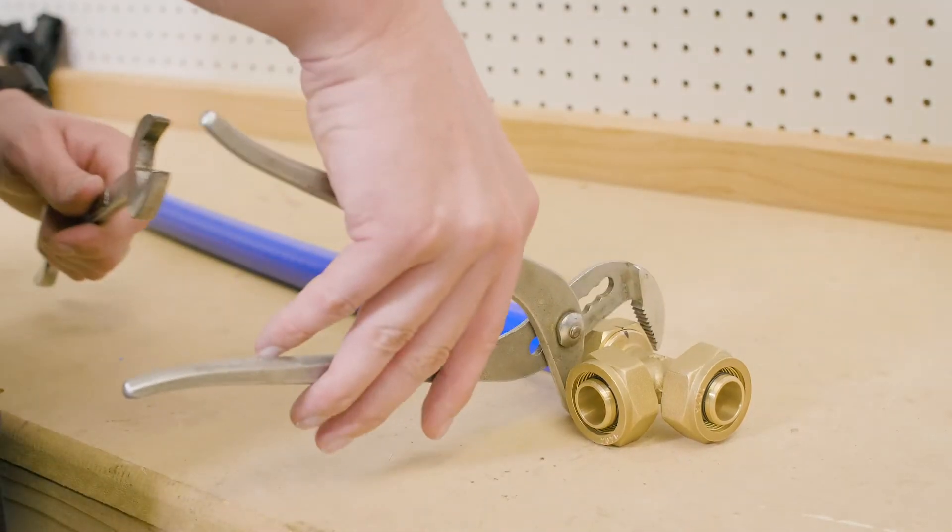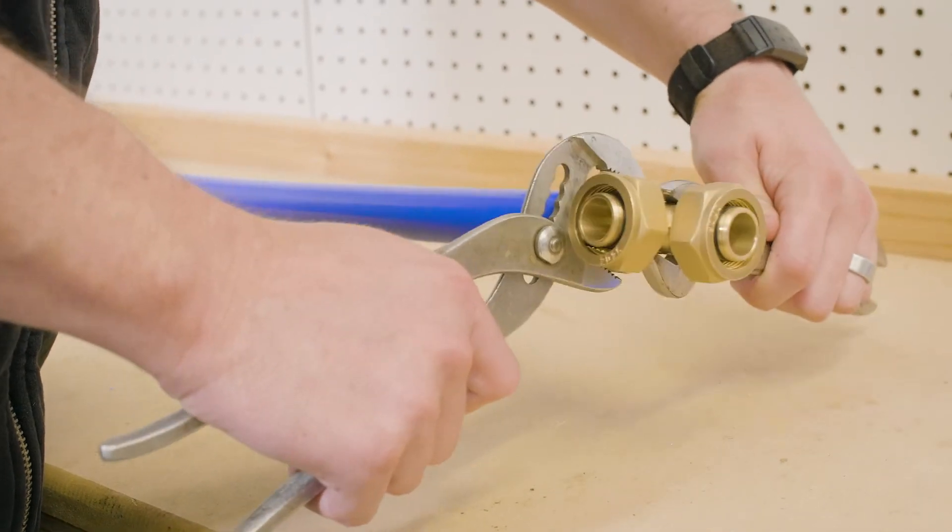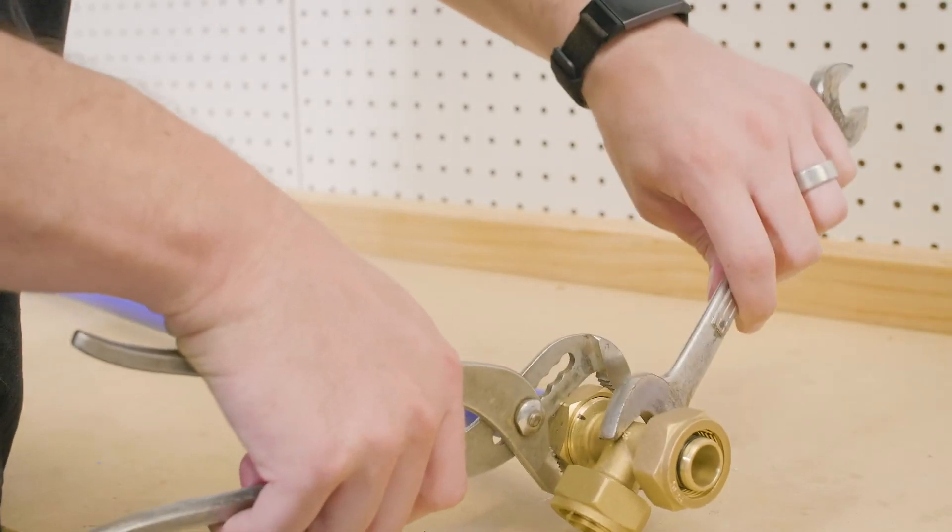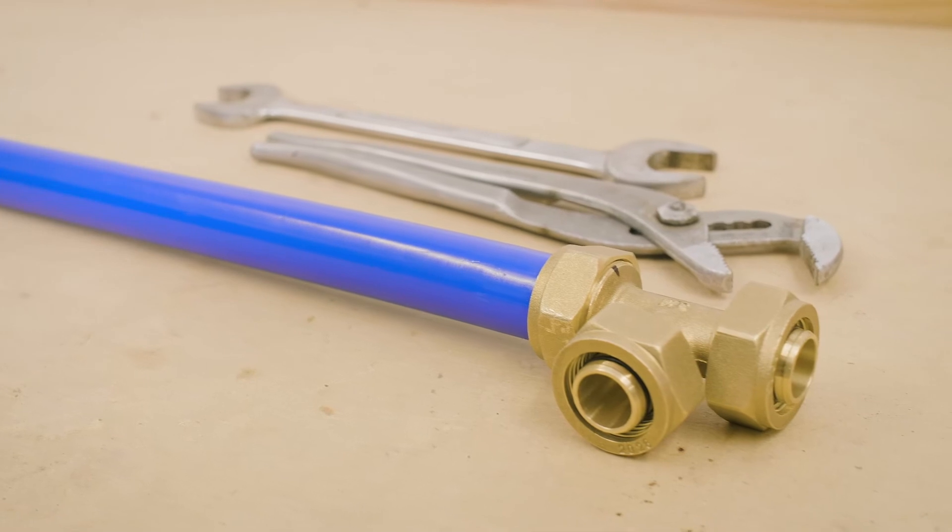With a wrench, use the reference mark as a guide to tighten the fitting three-quarters of a turn or until tight. Note, over tightening may cause damage to the pipe.